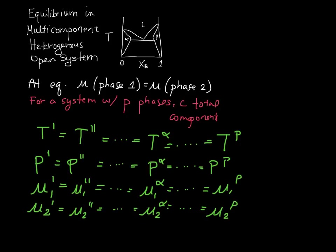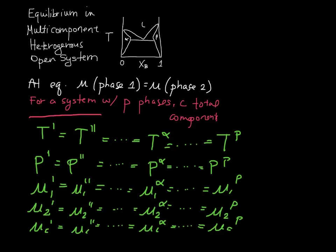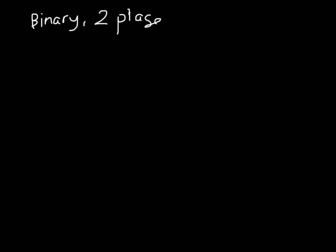We can keep going with this list all the way down to the C-th component. In reality, we will generally only be dealing with two components and maybe two or three phases. So we will consider a subset of these equations. If we have two components and two phases — let's say the alpha phase and the liquid phase — we can simplify and the conditions for equilibrium are written accordingly.